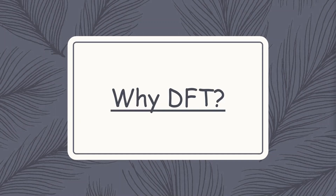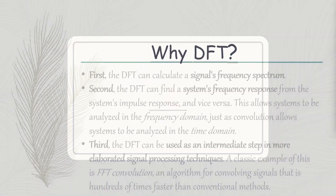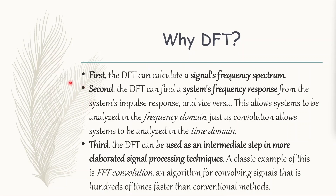Now let's see why we need DFT and where we use it mostly. DFT is one of the most important tools in digital signal processing. The three major use cases are: first, DFT can calculate a signal's frequency spectrum. Second, DFT can find a system's frequency response from a system's impulse response and vice versa, allowing systems to be analyzed in the frequency domain just as convolution allows analysis in the time domain. Third, DFT can be used as an intermediate step in more elaborate signal processing techniques — a classic example being FFT convolution, an algorithm for convolving signals that is hundreds of times faster than conventional methods.